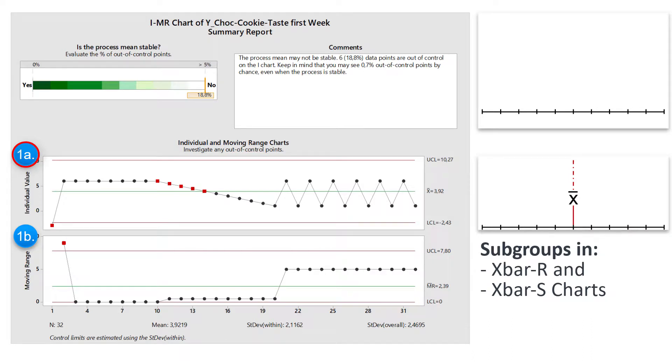In the X-bar-S and X-bar-R chart, the sample is divided into subgroups and each data point in the chart represents the mean value of a subgroup.